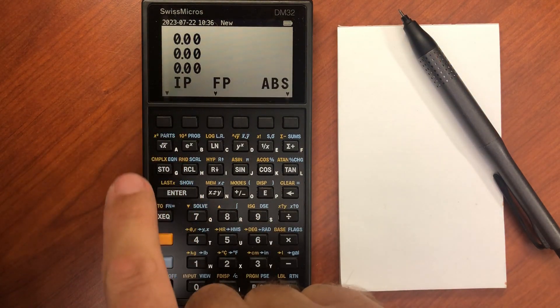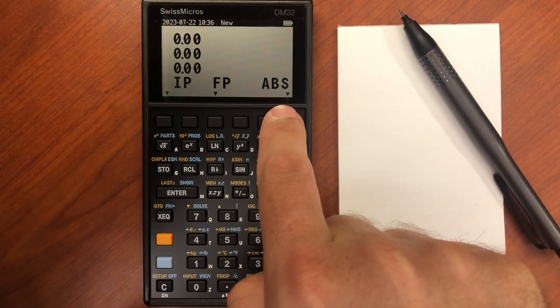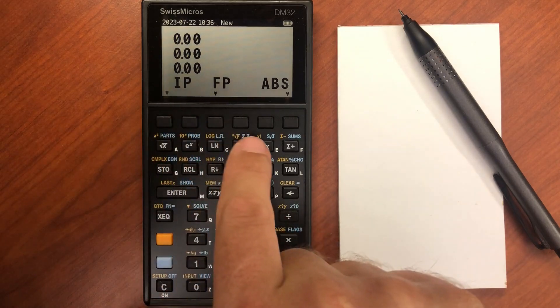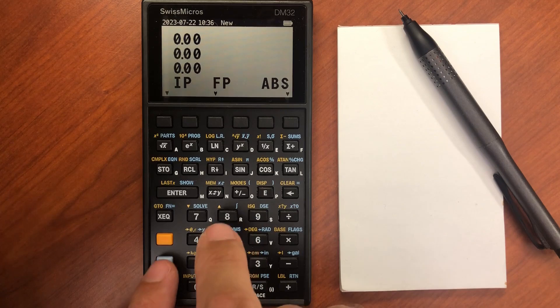If I go here, I can get the parts, so I can get the integer portion, the fraction portion, and the absolute value. The integer portion being the portion before the decimal point, the fraction portion the portion after the decimal point.